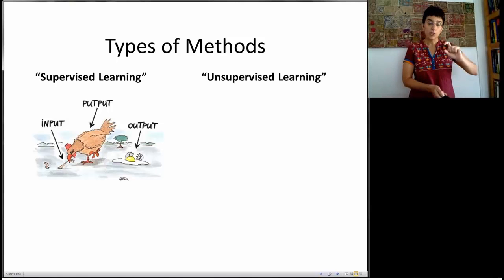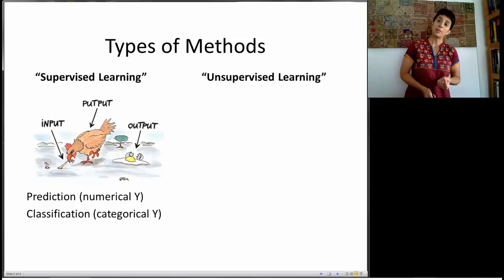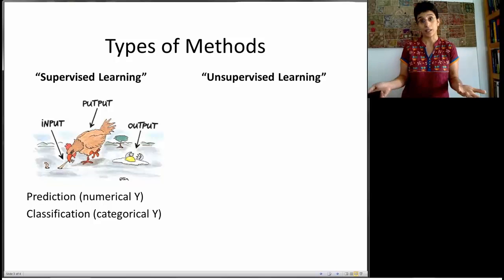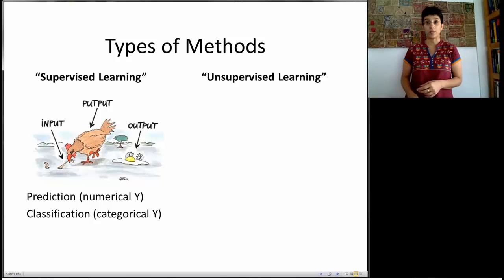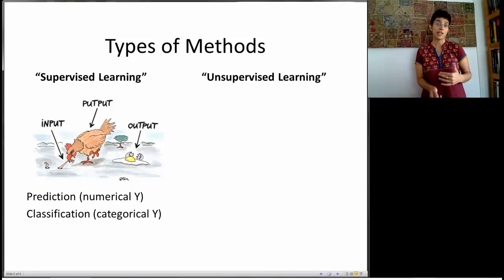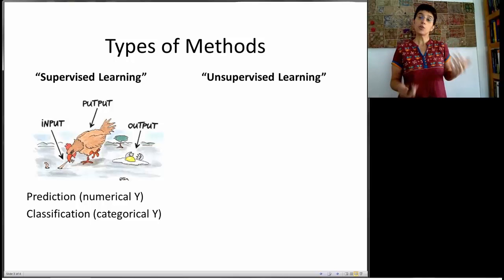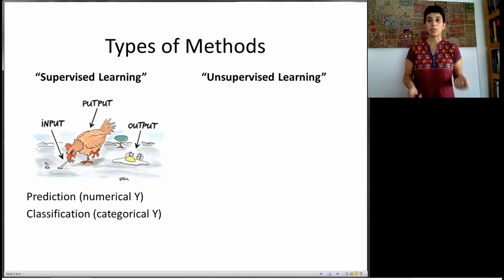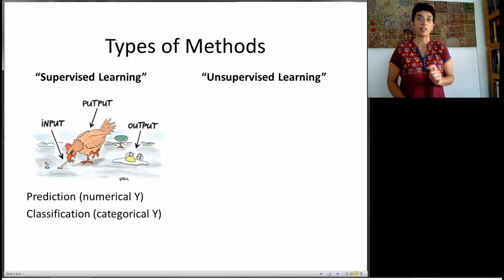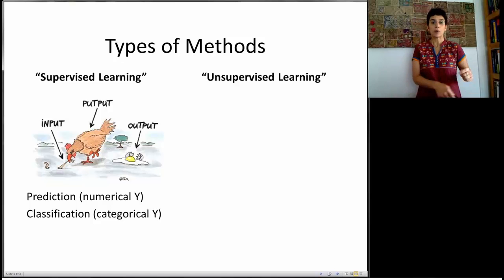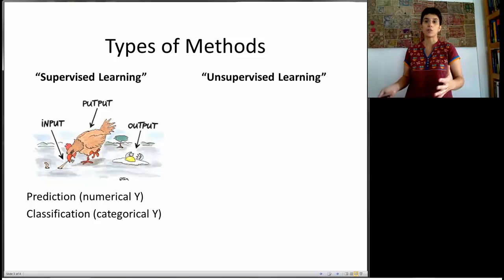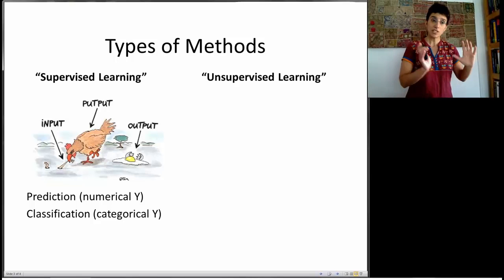Now outputs are typically one of two types. They can be numerical, or they can be categorical. Numerical outcomes, or outputs of interest, are something like your salary, if we're trying to predict what's going to be your salary after you graduate. In contrast, if we're trying to predict a categorical output, such as whether you'll find a job or not within three months, that's a categorical output. When we're using supervised learning with a numerical output, we call it prediction. Or sometimes, machine learning people will call it regression. When we're trying to predict a categorical outcome, we call this classification, because we're trying to classify records into one of several classes. So this is all supervised learning.